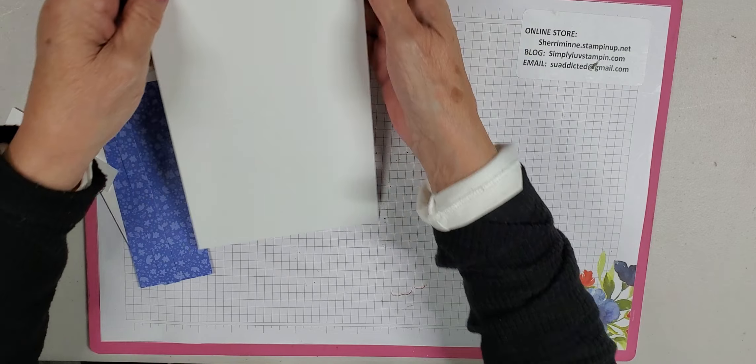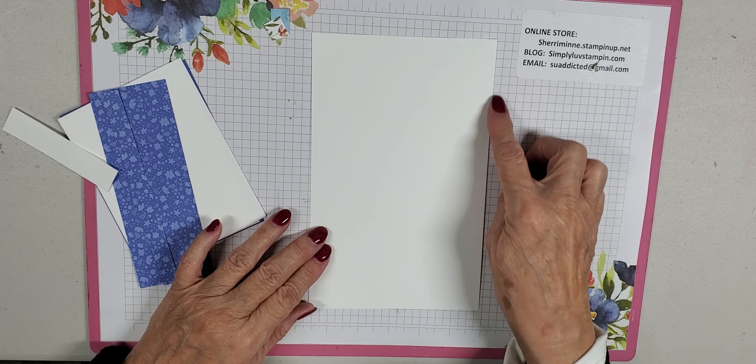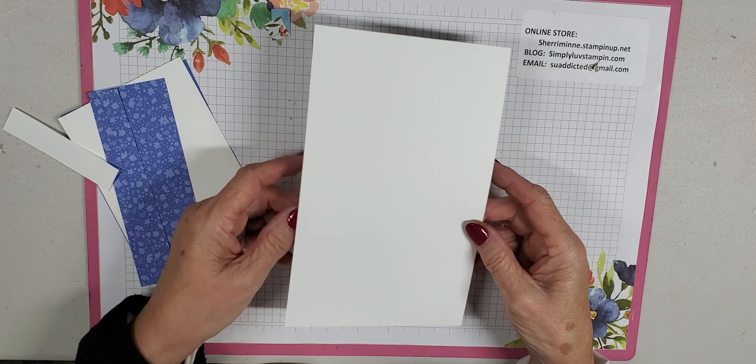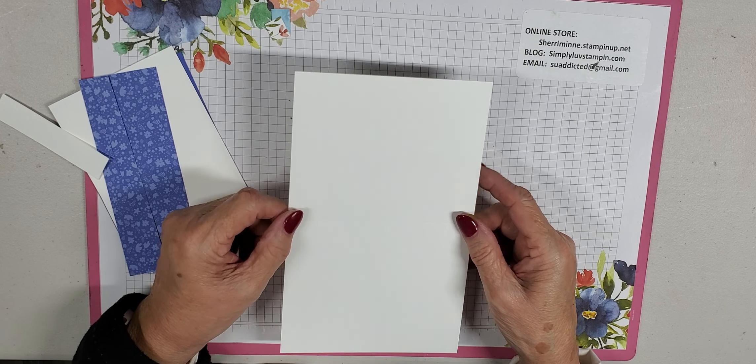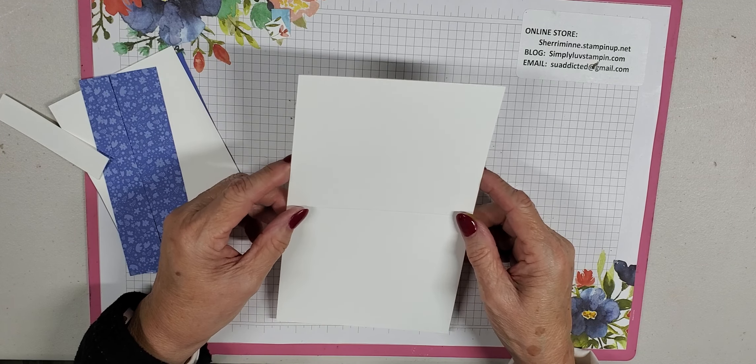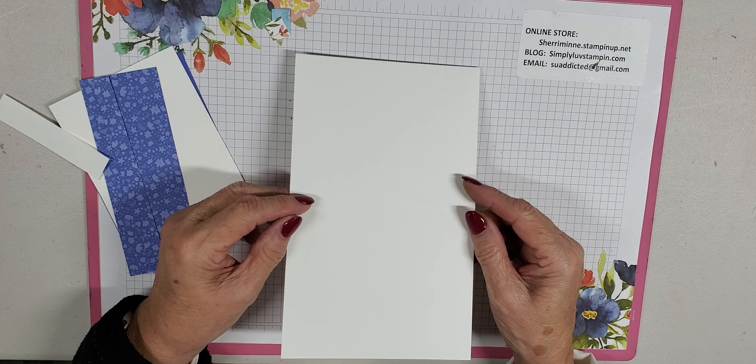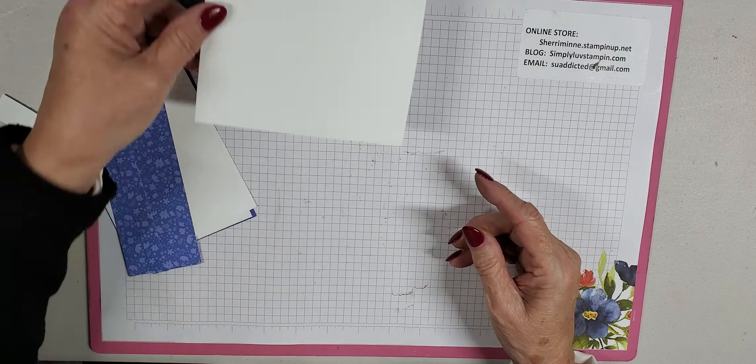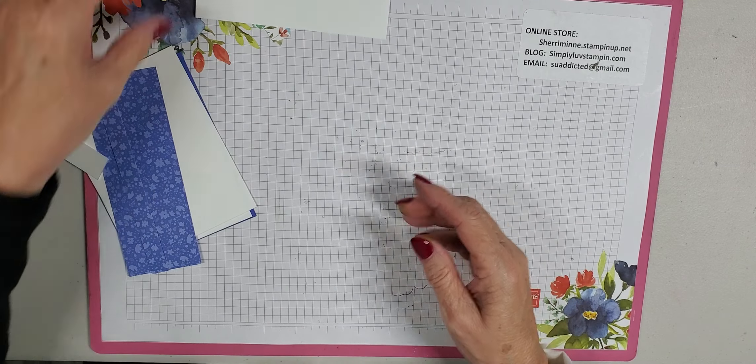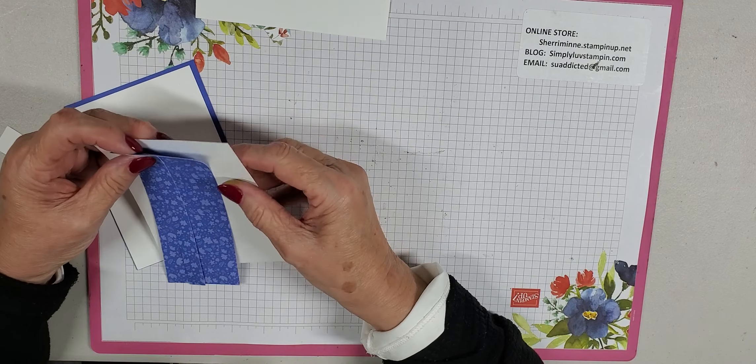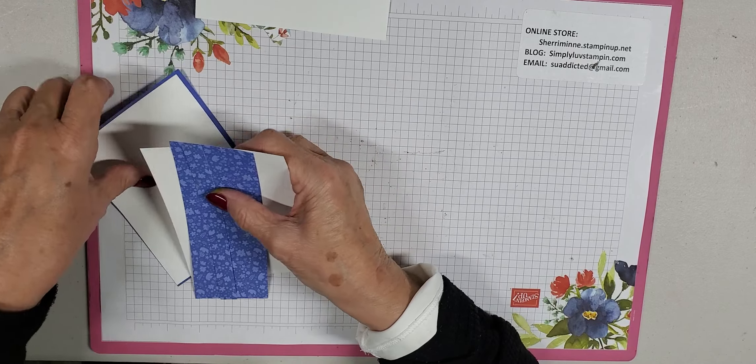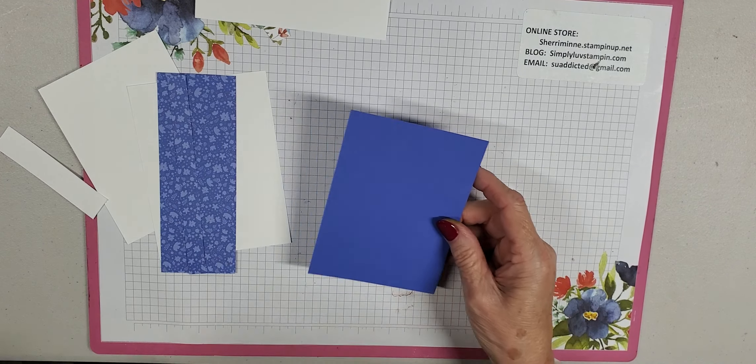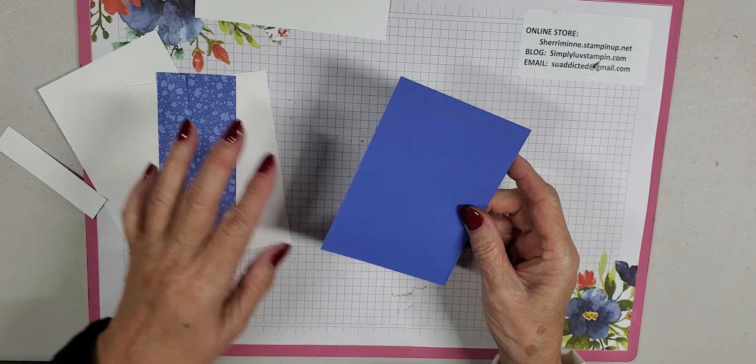In your packet, you will have, as always, your envelope. You will have a thick basic white card base. This is five and a half by eight and a half, scored at four and a quarter. If you're getting some shadows and glares, I really do apologize. With this new time change it gets dark so much earlier and I should have been in here earlier in the day to take advantage of the natural light. But I didn't make it.